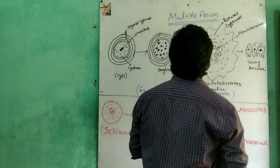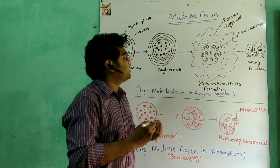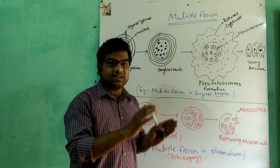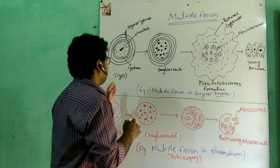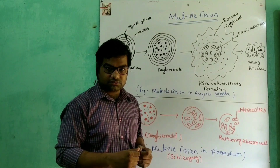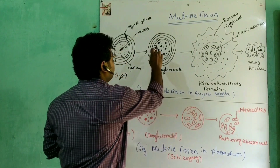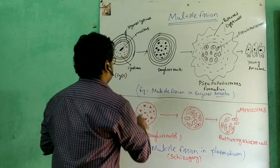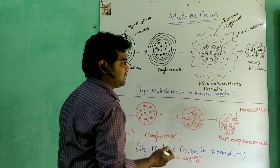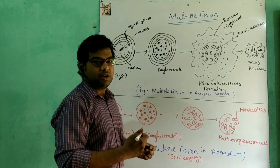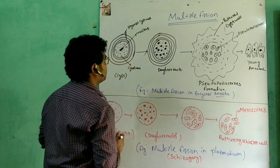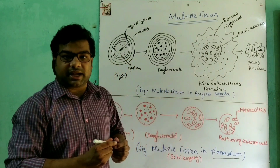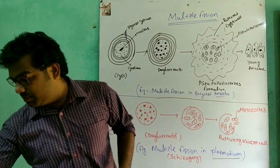Next is multiple fission. Multiple fission is the process in which the parent cell divides into many similar daughter individuals. In this process, the parent nucleus undergoes repeated division, and the number of nuclei formed equals the number of daughter cells produced.